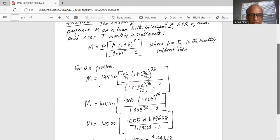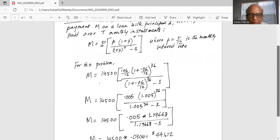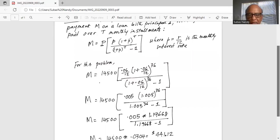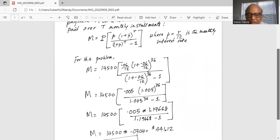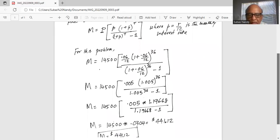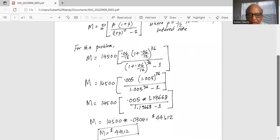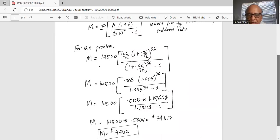So M is equal to 14,500 multiplied by 0.005, multiplied by 1.005 raised to the power of 36.